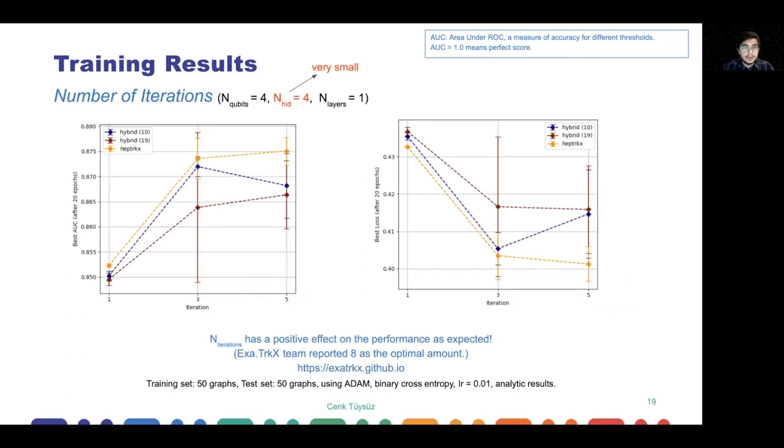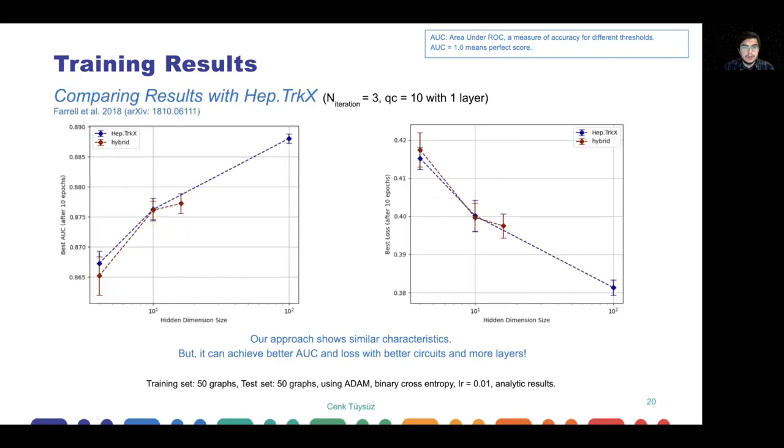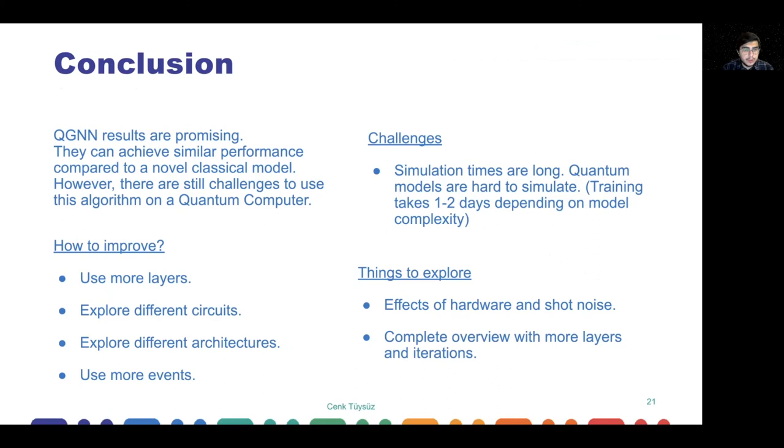When we look at the comparison of circuit 10 with 19, along with the HEP-TrackX version, with the increasing iterations of the graph neural network, we are getting better results. Not all the time, as you see in the blue line, but we are still under the classical model, though we are trying to improve on this. When we make a full comparison with circuit 10 and the HEP-TrackX model, we see that with increasing hidden dimension size, we are kind of similar to the classical model, but not all the time. We couldn't actually process more than 16 qubits, and we had to stay here to see our results. This means there is still a little bit more to do, a little bit more to explore.